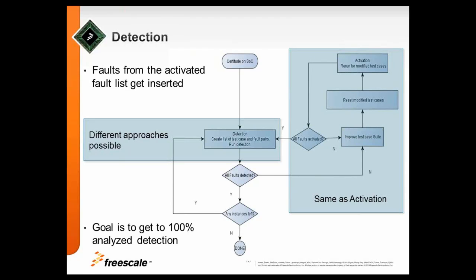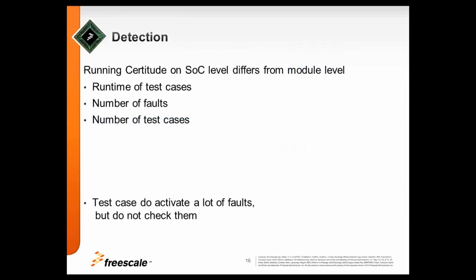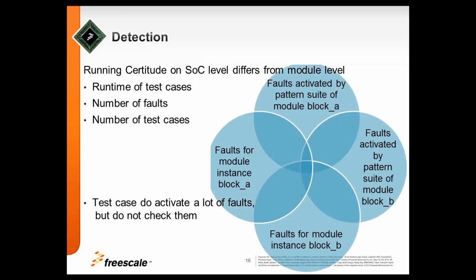But the key is here on the detection itself and the different approach is possible and I will show two or three examples for that. What's the difference from module to SoC? Runtime, number of faults, if you would consider everything it's too much, and number of test cases. And the other thing is every test case you run at the SoC will cover a lot, or will activate a lot of things which it actually doesn't check. So it's very difficult for certitude to figure out what's the right test case to find something and that's the main thing. You can help it.